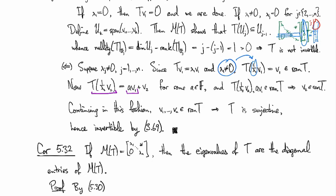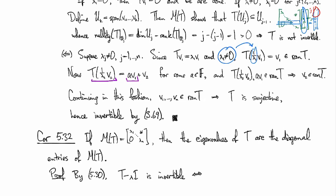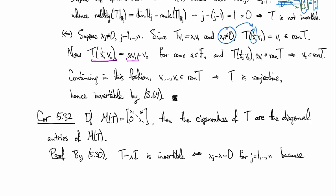This is more or less immediate. By 5.30, the one we just proved, T minus lambda I is invertible if and only if its diagonal entries are non-zero, which means lambda_j minus lambda is non-zero. That's because of the form—the matrix for T minus lambda I just looks like the matrix for T with the lambdas subtracted from the diagonal.